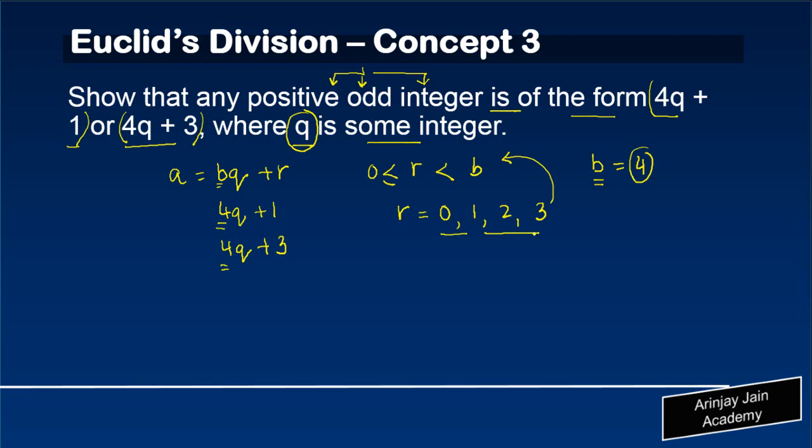Now, if we apply the value of r in a, what do we get? We get that a could be equal to 4q plus the remainder, which is 0, 1, 2, 3. So it could be 4q plus 0, it could be 4q plus 1, 4q plus 2, 4q plus 3. These are the potential values that a can have.